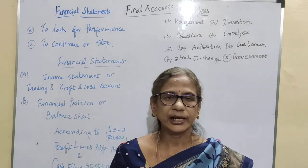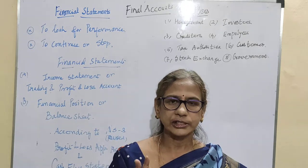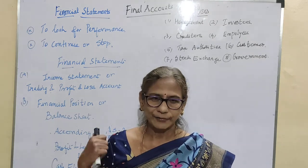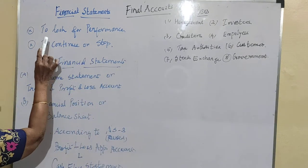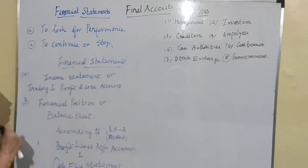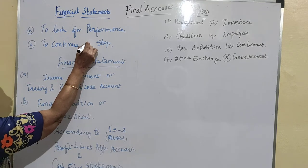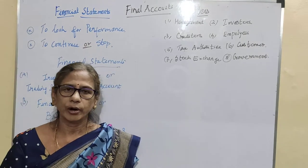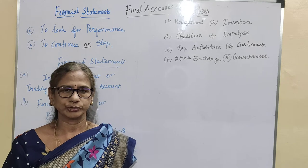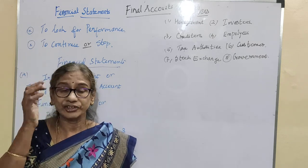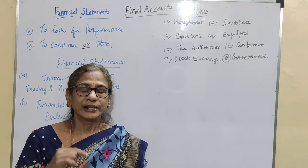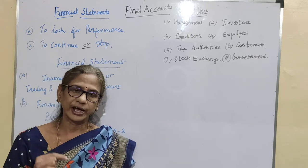The final accounts have two statements: one is a trading and profit and loss account, also called the income statement, and the other is a balance sheet or financial position statement. These financial statements show the performance of the business - whether it has earned profit or is going at a loss, to help decide whether to continue or stop. If profit is progressing well, they plan for future growth and take financial decisions on how much more to invest.